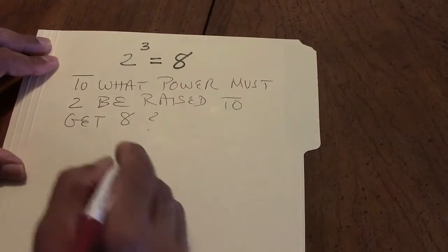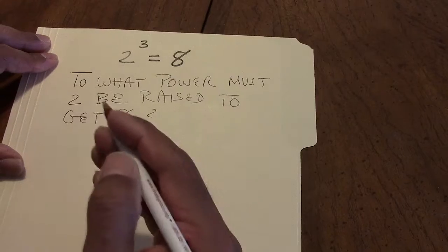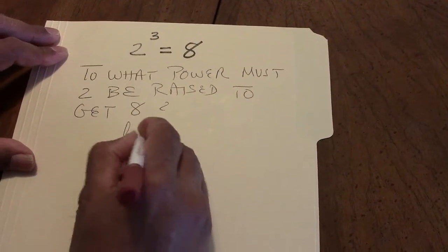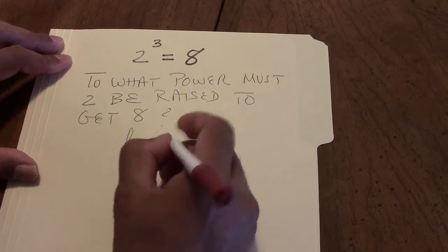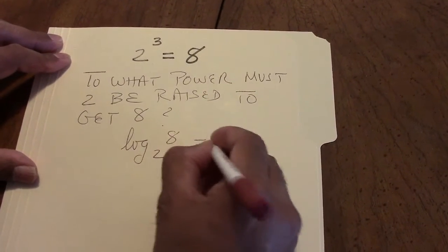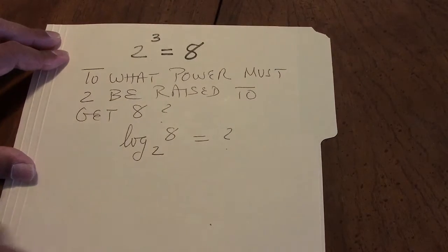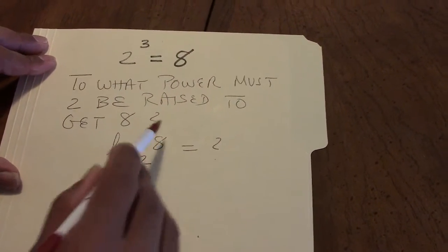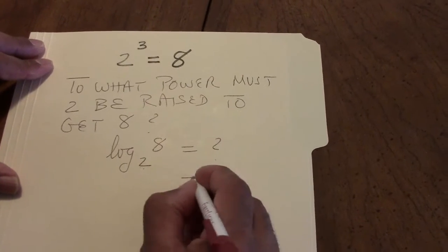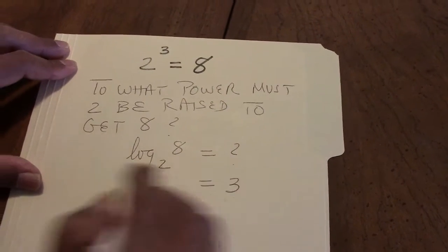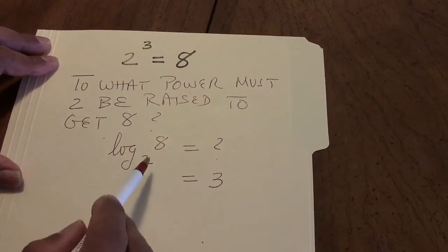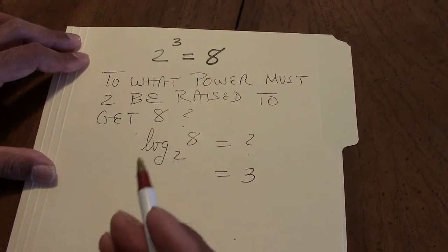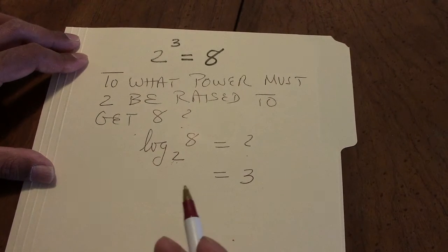This question can be stated as the logarithm because this question translates to log to the base 2 of 8 equals what? And we know the answer is 3. Therefore, the logarithm to the base 2 of 8 is 3. And that is the rhythm of logarithm.